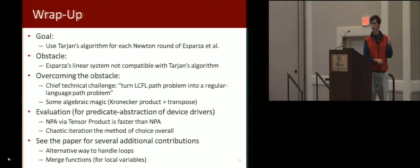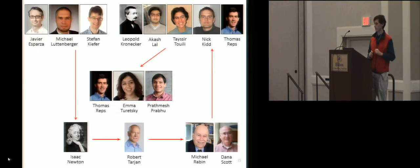And the evaluation thumbs up on the first one. We did make an improvement in Newtonian program analysis. For predicate abstraction, chaotic iteration turned out to be the method of choice overall. The paper has a couple of other additional contributions. An alternative way to handle loops. We handle Kleene star directly. And also merge functions for local variables.